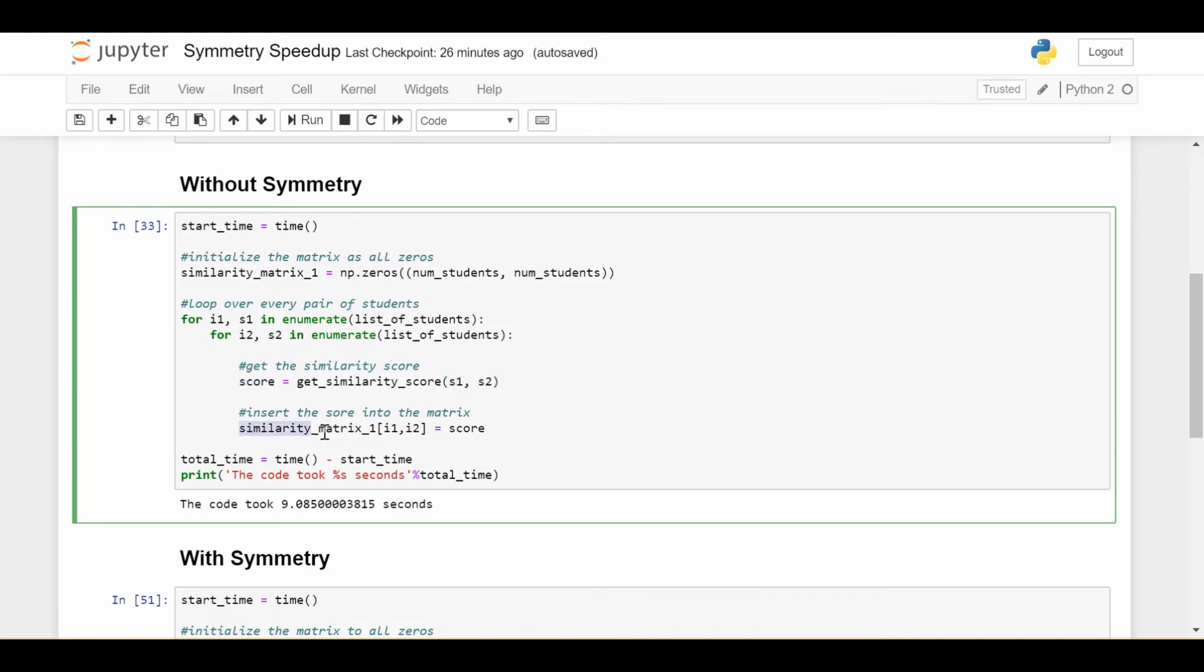And then we go ahead and say similarity matrix at index i1, i2 is equal to the score. That's it. And it'll work, right? Because we're just looping over the entire matrix and putting in all the scores. We get the total time. It took almost 10 seconds. So something like 9 seconds, right?